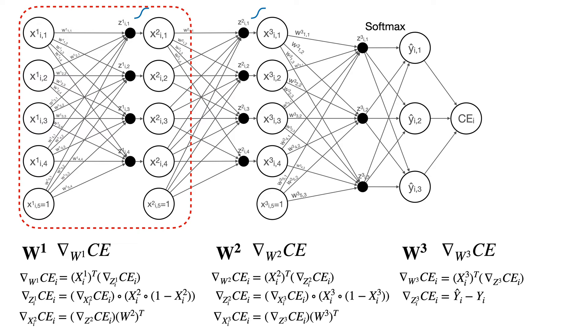The W1 gradient is written in terms of the Z1 gradient. The Z1 gradient is written in terms of the X2 gradient. The X2 gradient is written in terms of the Z2 gradient. And so on.